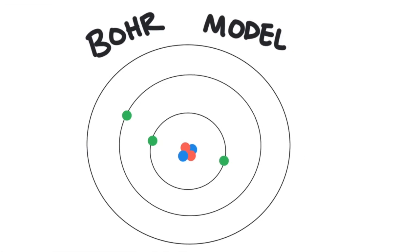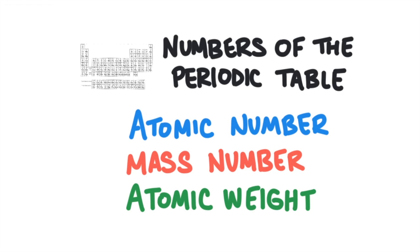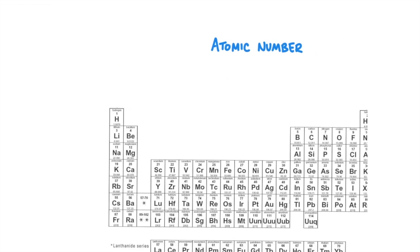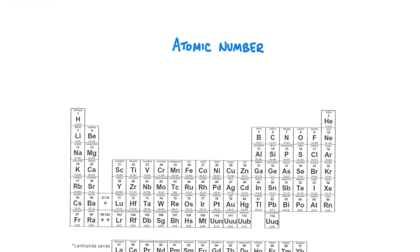There are three numbers that are used to describe the atoms of a particular element: the atomic number, the mass number, and the atomic weight. The number of protons is what makes each atom unique. On the periodic table, the number of protons in the nucleus of an atom is given by the atomic number. Hydrogen has one proton, so its atomic number is one. Helium has two protons, so its atomic number is two. And zirconium has 40 protons, and its atomic number is 40.